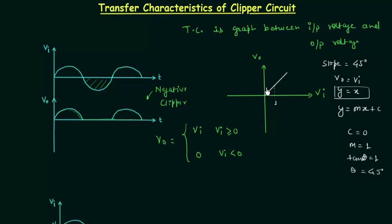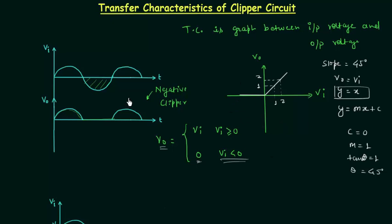When VI is 1, VO is also equal to 1; when VI is equal to 2, VO is also equal to 2. So this is how the plot will look when VI is greater than or equal to 0. When VI is less than 0, VO is equal to 0. So this is how the final transfer characteristics for this waveform will look.